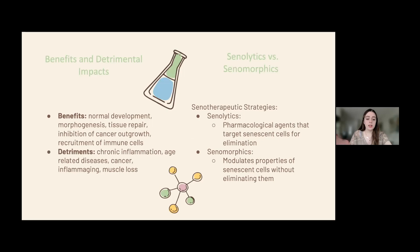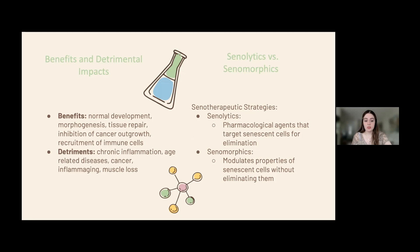SASPs include pro-inflammatory cytokines, growth factors, proteases, receptors, extracellular vesicles, bioactive lipids, and extracellular matrix proteases, which can be potential biomarkers for senescence. An SASP favors proper tissue development, tissue repair, inhibition of cancer growth, and recruitment of immune cells.